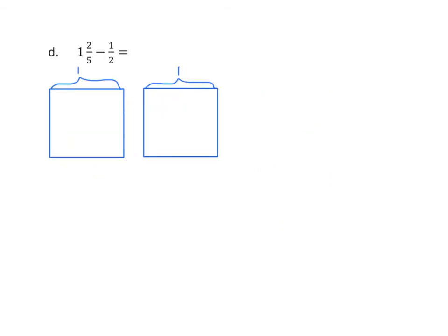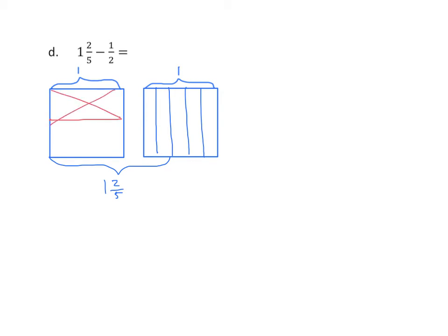Let's do one more example. We have 1 and 2 fifths minus 1 half. We'll now partition the second rectangle into fifths, and we'll bracket 1 whole and 2 of the fifths, making 1 and 2 fifths. Now we'll look at the subtrahend, minus 1 half. Again, we're going to take that from the whole. I partition the whole into two parts and cross out 1, because 1 half is being subtracted from the whole. So in essence, what I've done here is 1 minus 1 half equals 1 half.